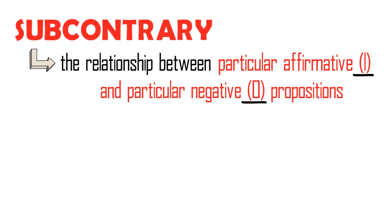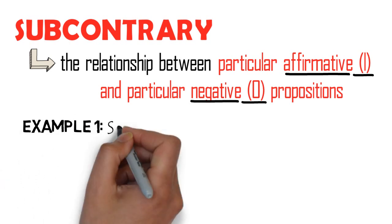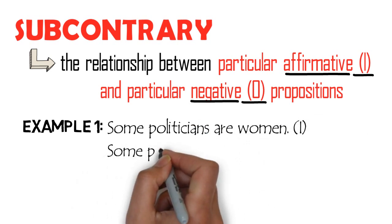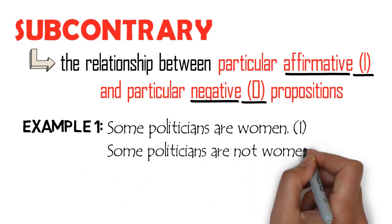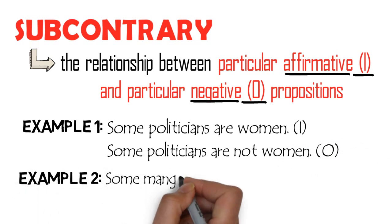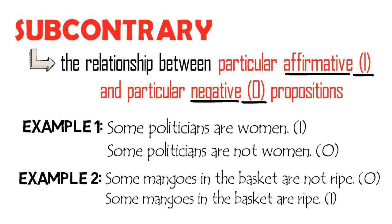As we can see in the image of a square of opposition, subcontraries differ only in quality. Here are some examples: 'Some politicians are women' and 'Some politicians are not women.' Also, 'Some mangoes in the basket are not ripe' and 'Some mangoes in the basket are ripe.'